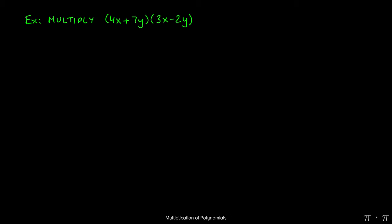Let's say we're asked to multiply the two binomials 4x plus 7y and 3x minus 2y. We start just as we have in previous examples by distribution, which is to say we multiply 4x by both 3x minus 2y, and then we add to that 7y getting multiplied by 3x minus 2y.